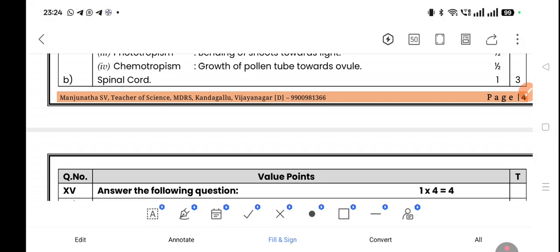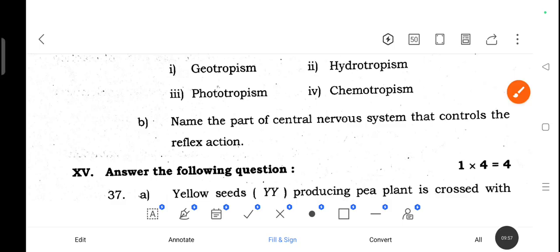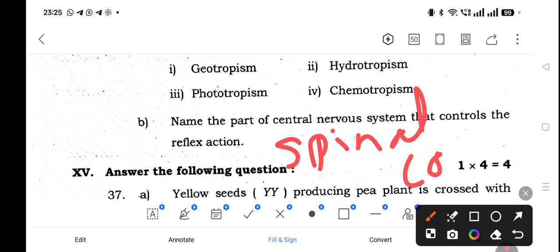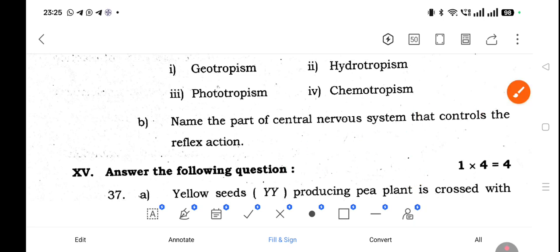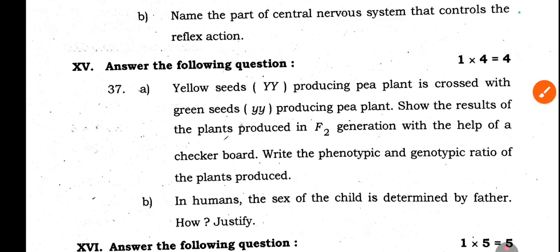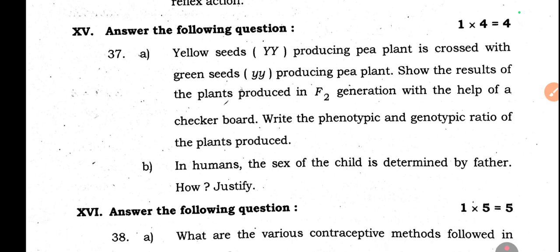Question b: Name the part of the central nervous system that controls reflex action. It is the spinal cord.